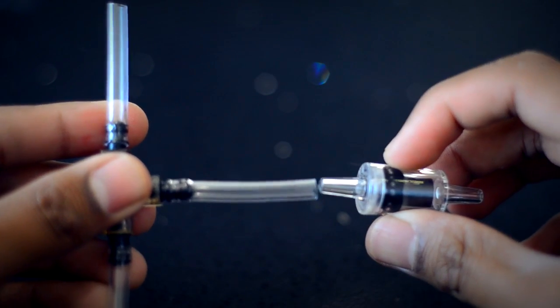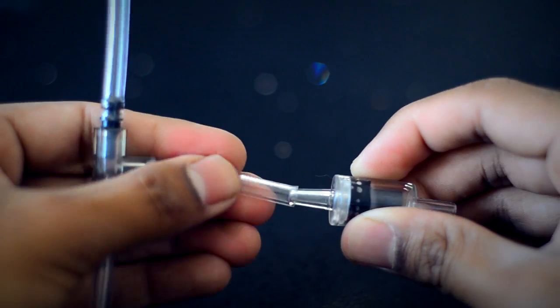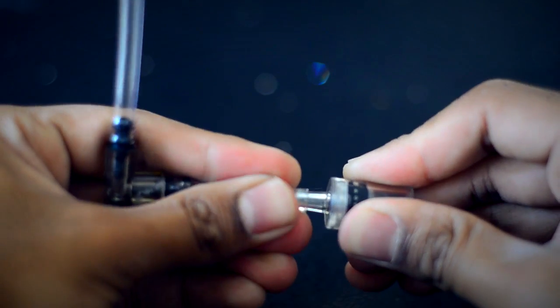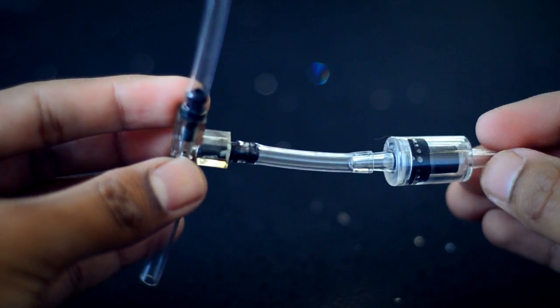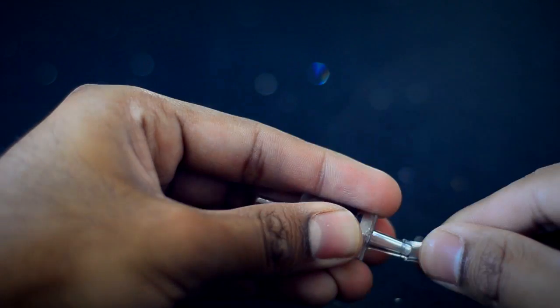Attach the input side of one check valve to the center of the 3-way connector and the output of the other check valve to any other side.